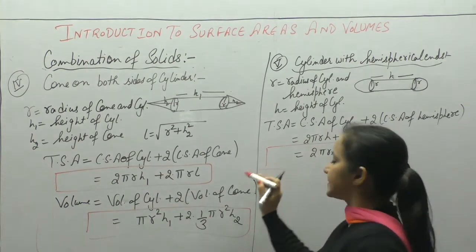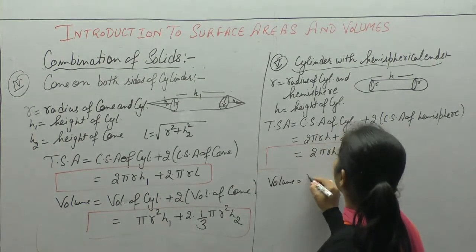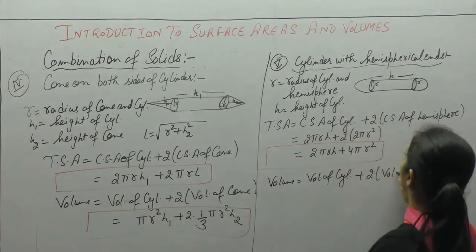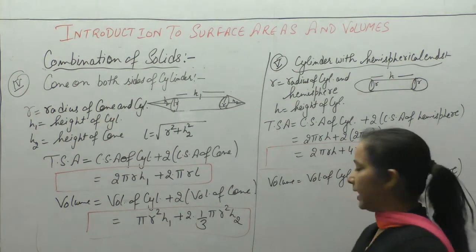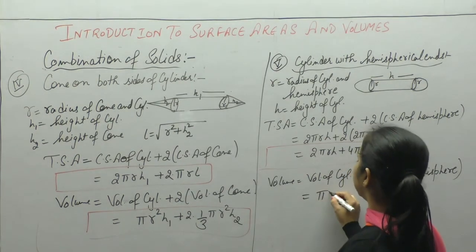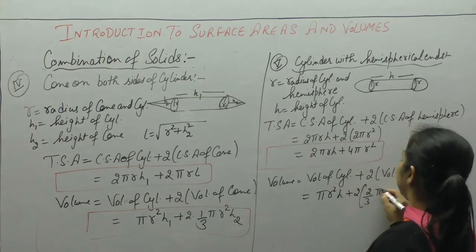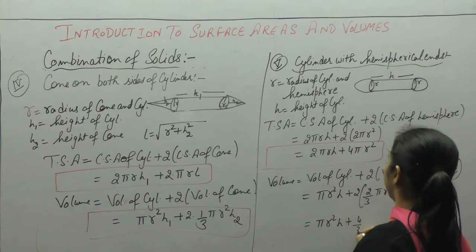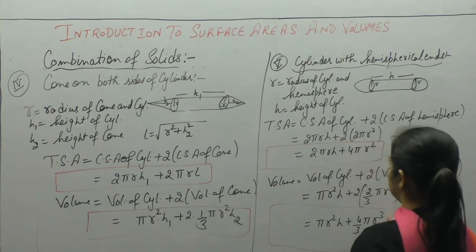Now for volume: volume = volume of cylinder + 2 × volume of hemisphere. Volume of cylinder is πr²h and volume of hemisphere is (2/3)πr³. So total volume = πr²h + (4/3)πr³. This is the volume in this case.